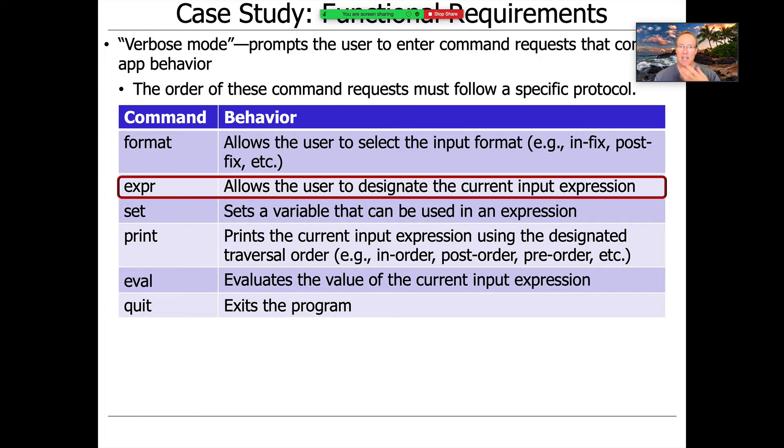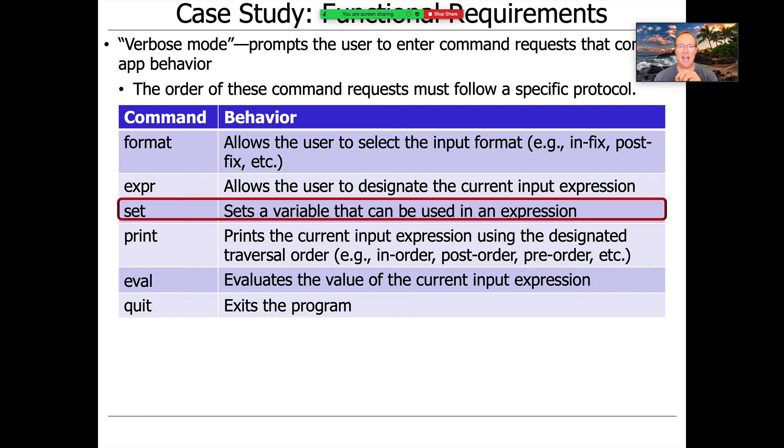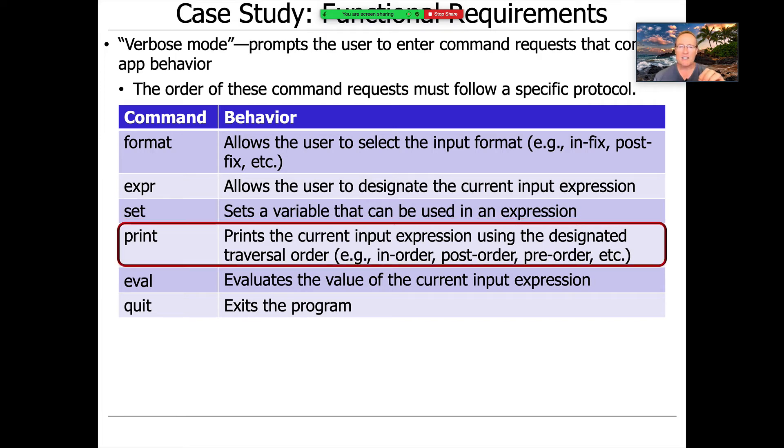After you do that, then you can give the expression. You can type the expr command and you can give the expression that you want to use, which would then be like minus five times three plus four. You can set variables that can be used in an expression. So you can say A equals five and B equals three and C equals four. And then you can write your expressions in terms of variables rather than numbers. You can print the contents of the expression tree that you've entered via your expression in in-order, post-order, pre-order, level-order, traversal-order.